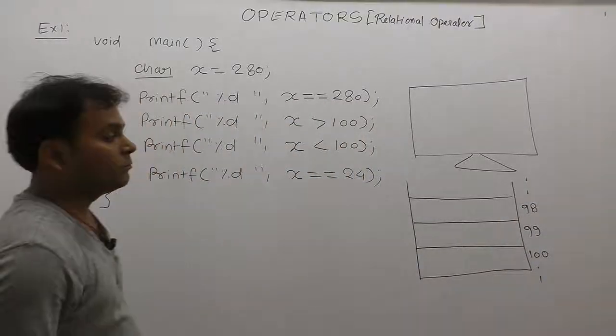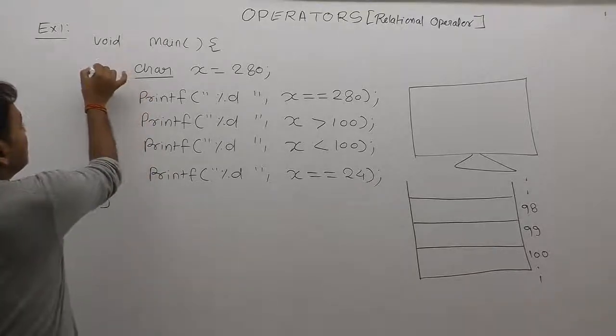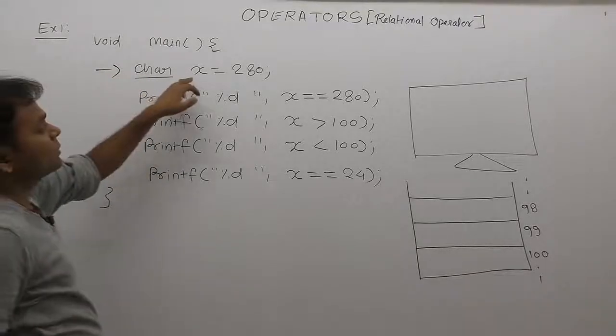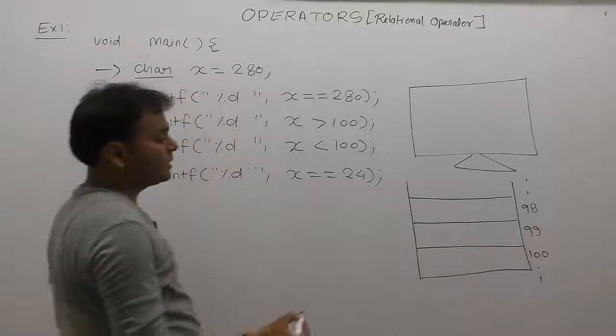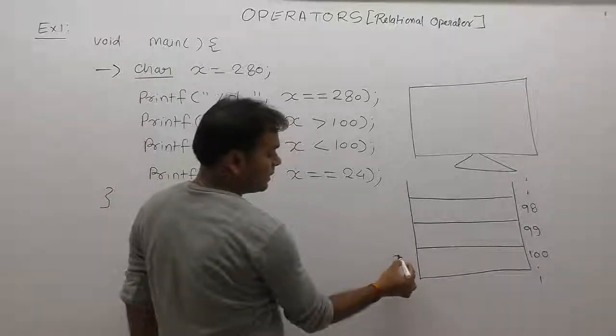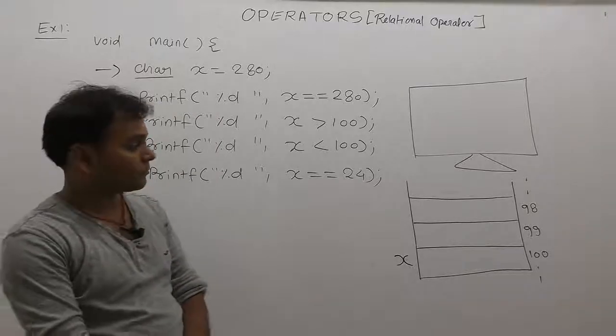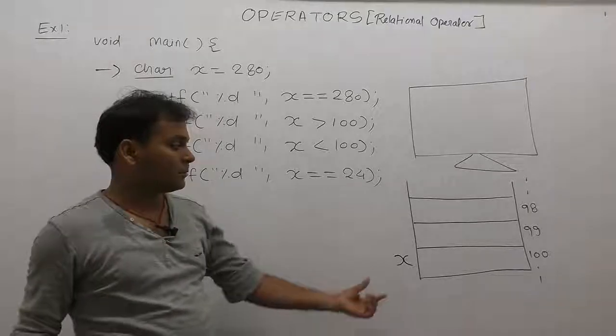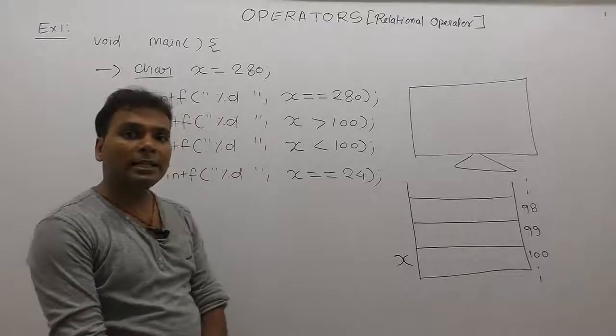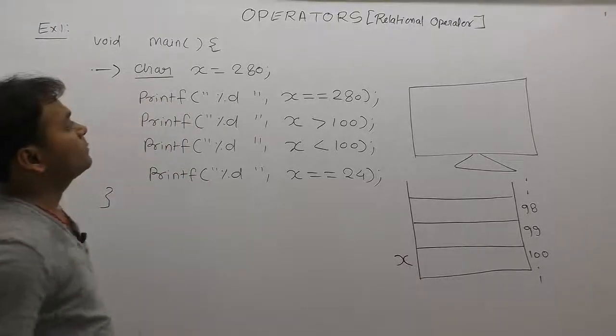This is the variable given. First of all, memory allocation for x. Here, x is a character variable. X's type is currently character data type. Therefore, x will take only 1 byte inside stack memory.